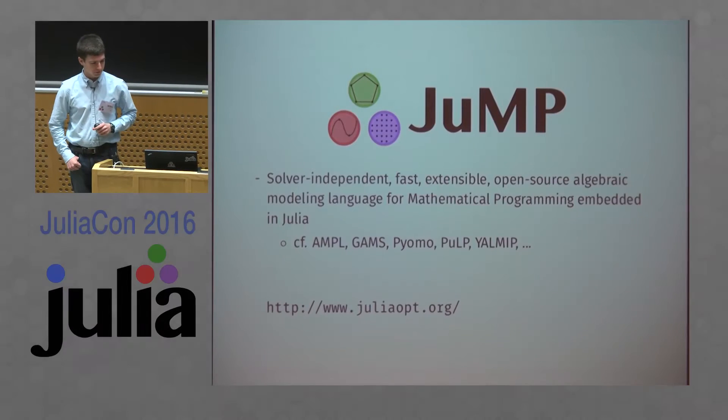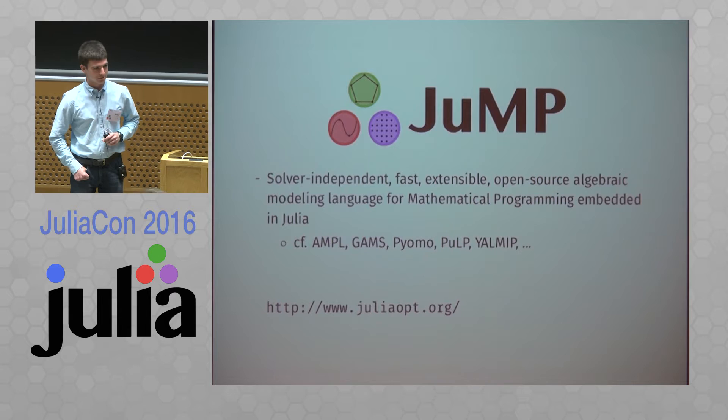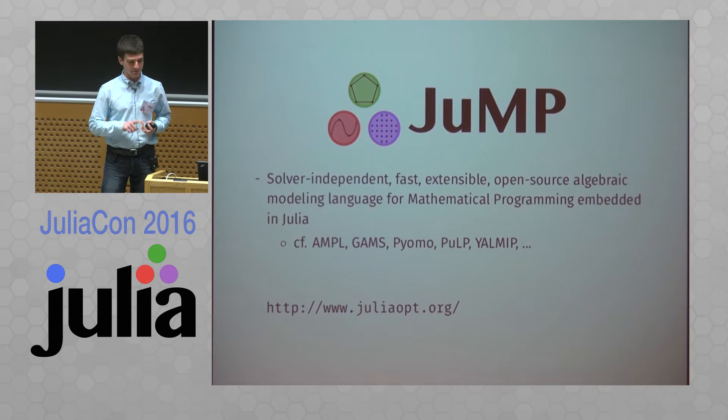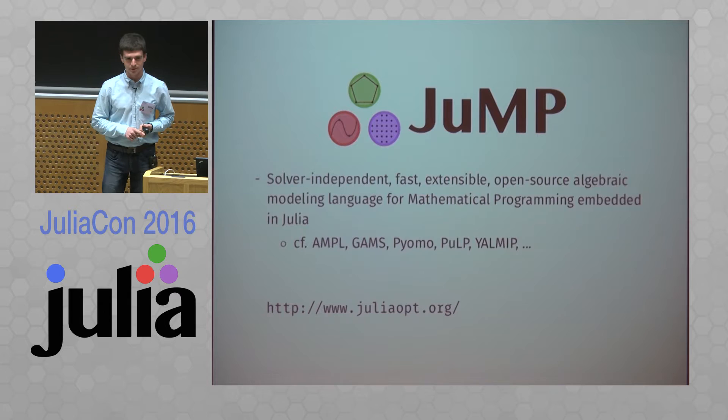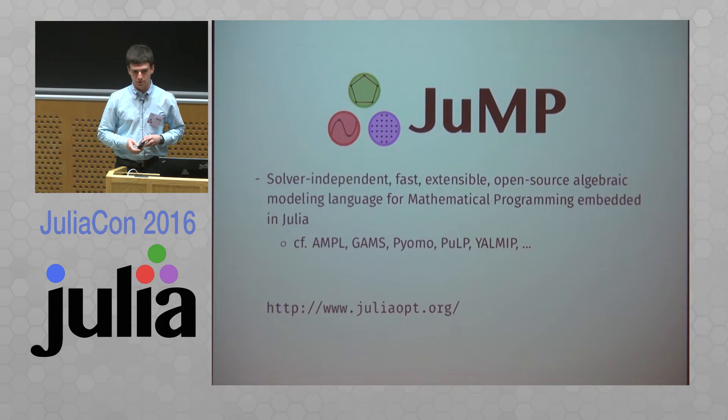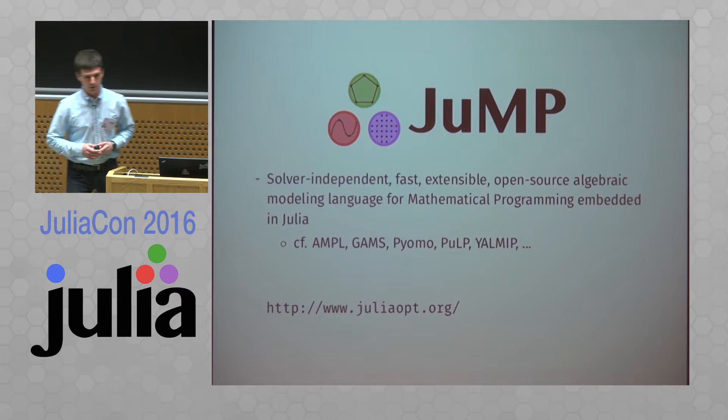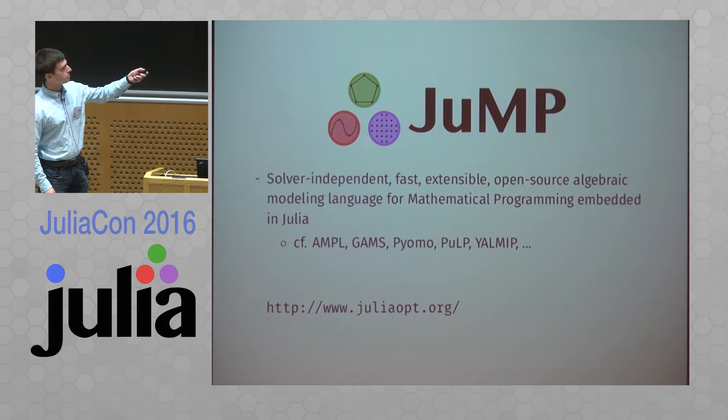JuMP, if you've never heard of it and don't know too much about optimization, it's a solver-independent, fast, extensible, open-source, algebraic modeling language for mathematical programming embedded in Julia. One of the interesting things about JuMP, which distinguishes it from a lot of other existing Julia packages, is that we are directly competing with a class of established commercial tools, AMPL and GAMS.